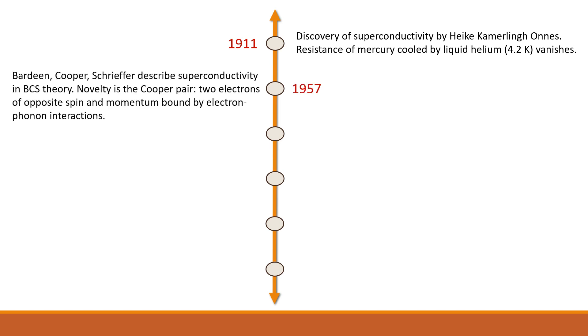Then, in 1957, Bardeen Cooper-Schreifer described superconductivity in their BCS theory. The finding was the introduction of a Cooper pair, which are two electrons of opposite spin and momentum bound by electron-phonon interactions.